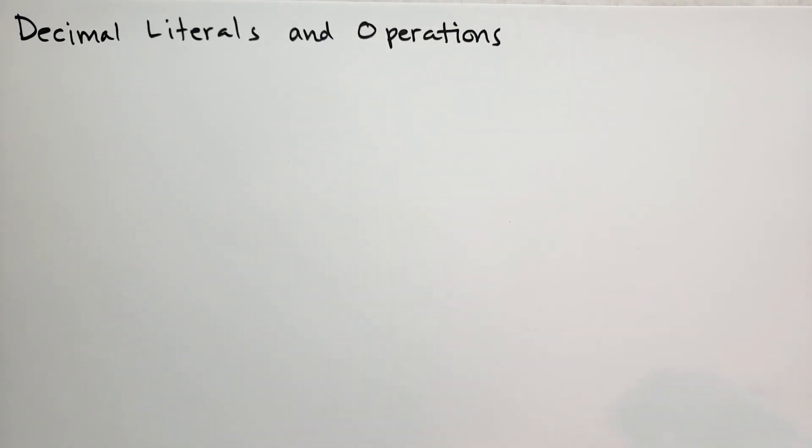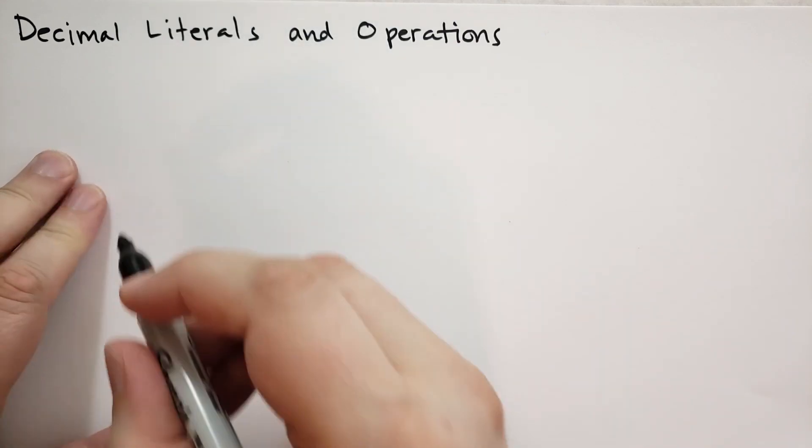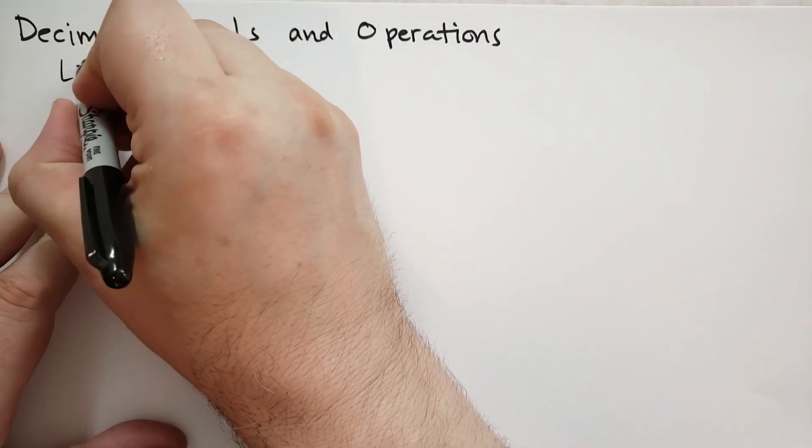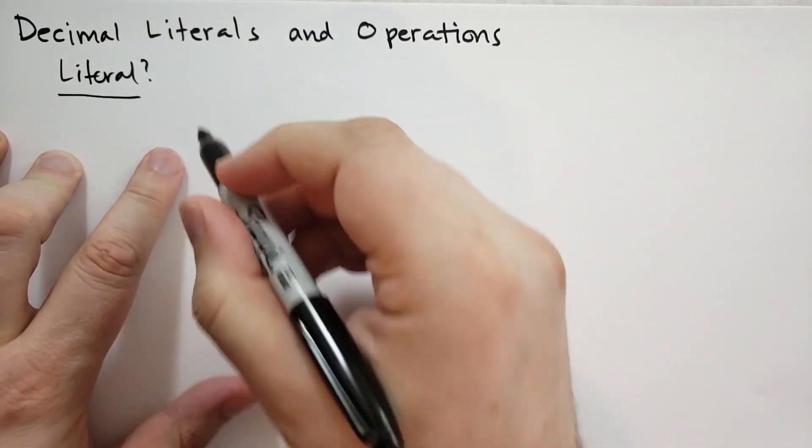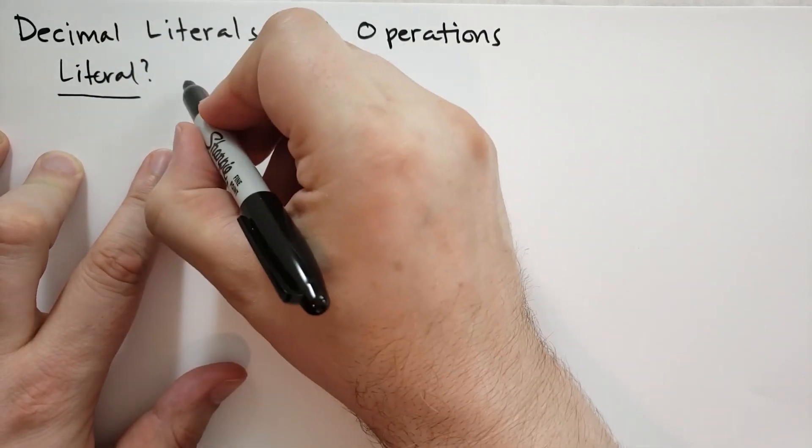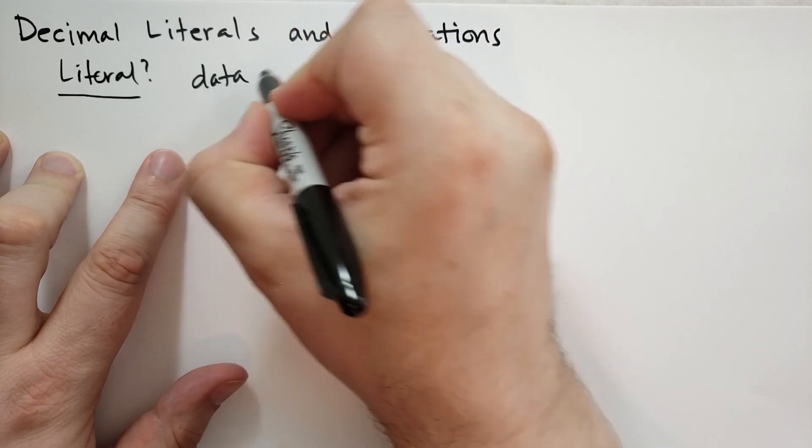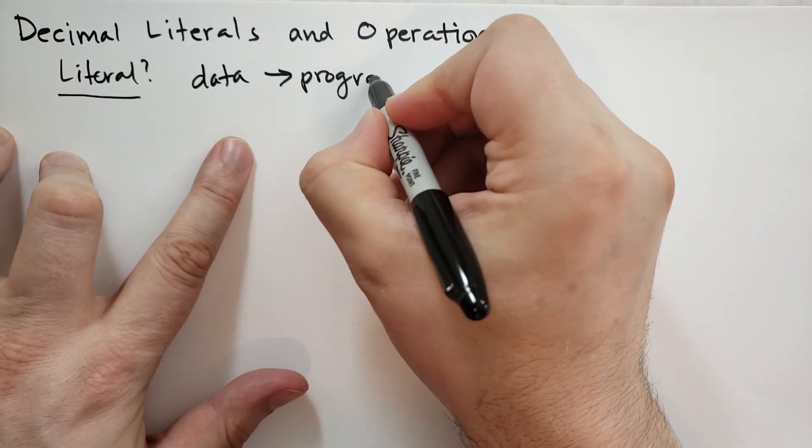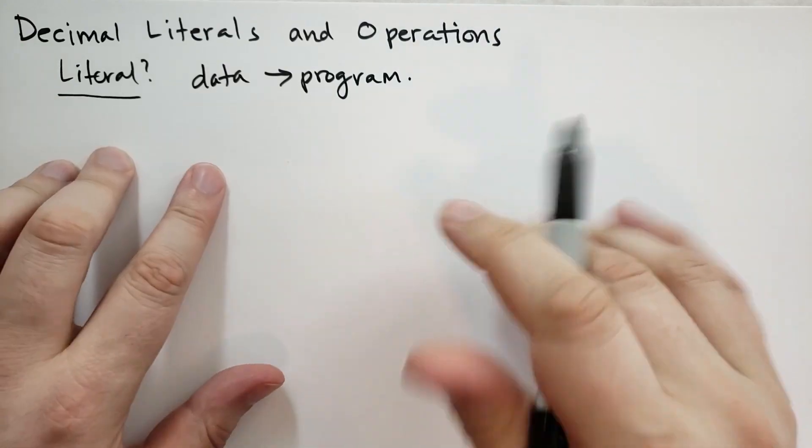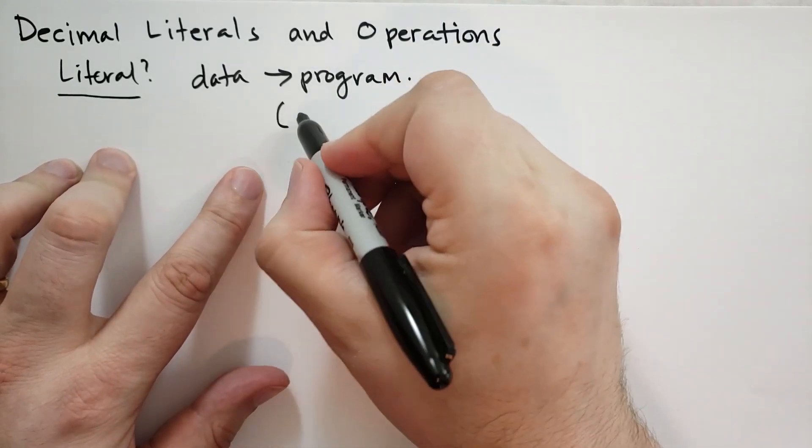We're going to cover here a couple of topics. First, what is a literal? In any programming language, a literal is a value or data that you put directly into the program itself. For instance, you might have a part of your program that says plus one.